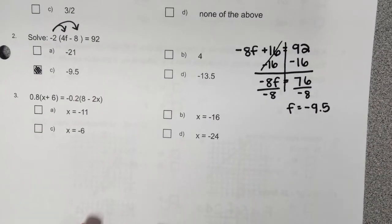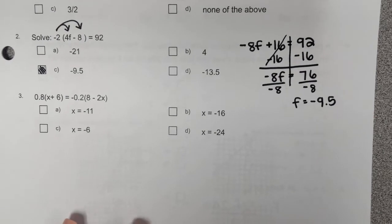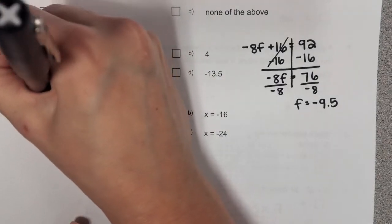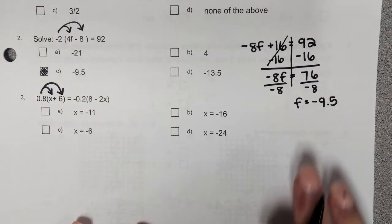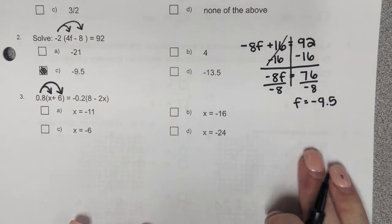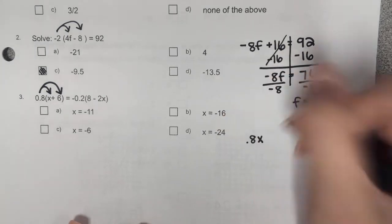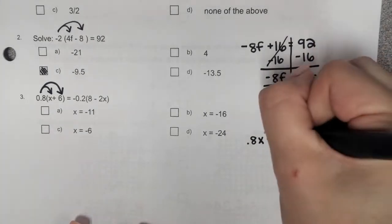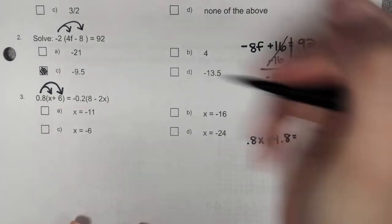On number 3, if they have decimals you are allowed to just plug it into your calculator, but we're going to do it by hand and then check using our calculator. Just like above, the first step is to distribute. So we're going to get 0.8x, and then 0.8 times 6, which is 4.8, so plus 4.8 equals...